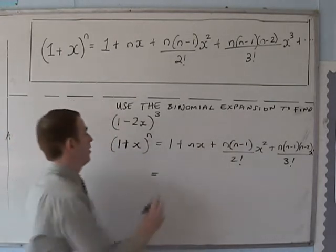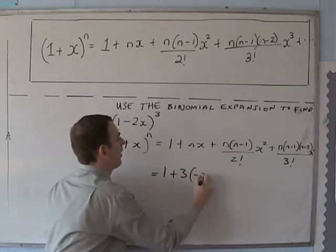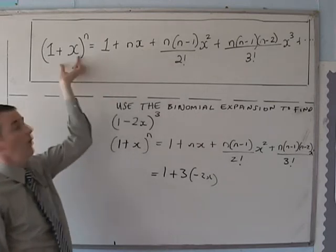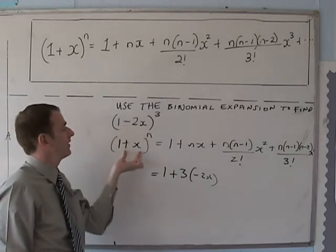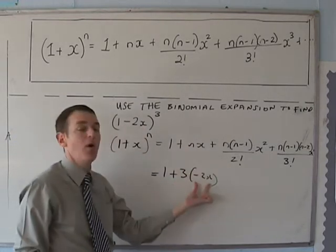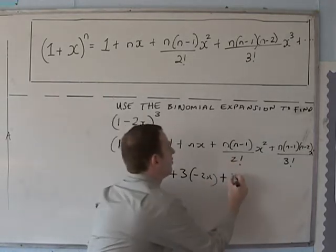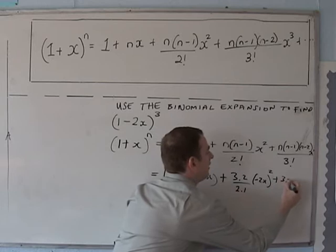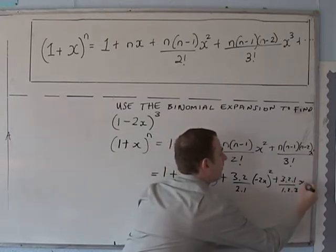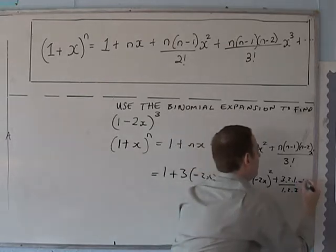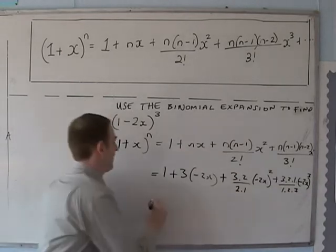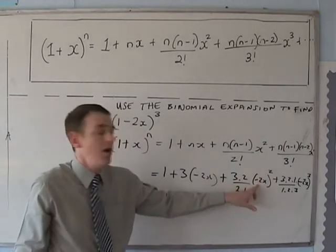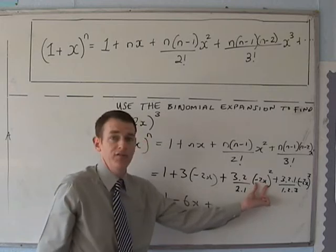Sticking all the numbers in, we get 1 plus 3 times (-2x). When you've got an x in the formula, don't think of it as literally x — think of it as meaning whatever is in the bracket. So here (-2x) is our x, and wherever x appears we substitute (-2x) instead. A common mistake is to forget to square the minus part — it's the entire (-2x) which is being squared, not just x.